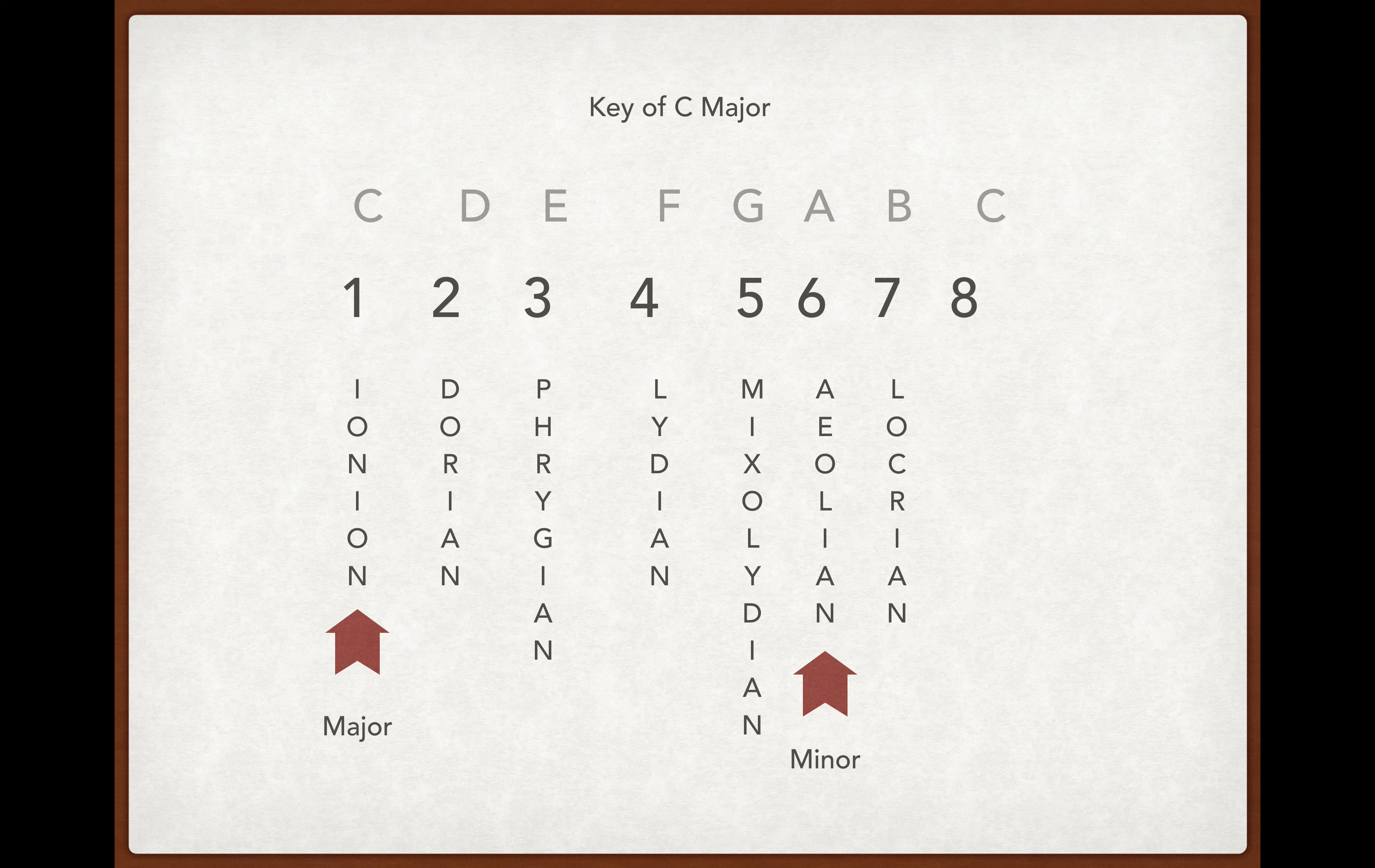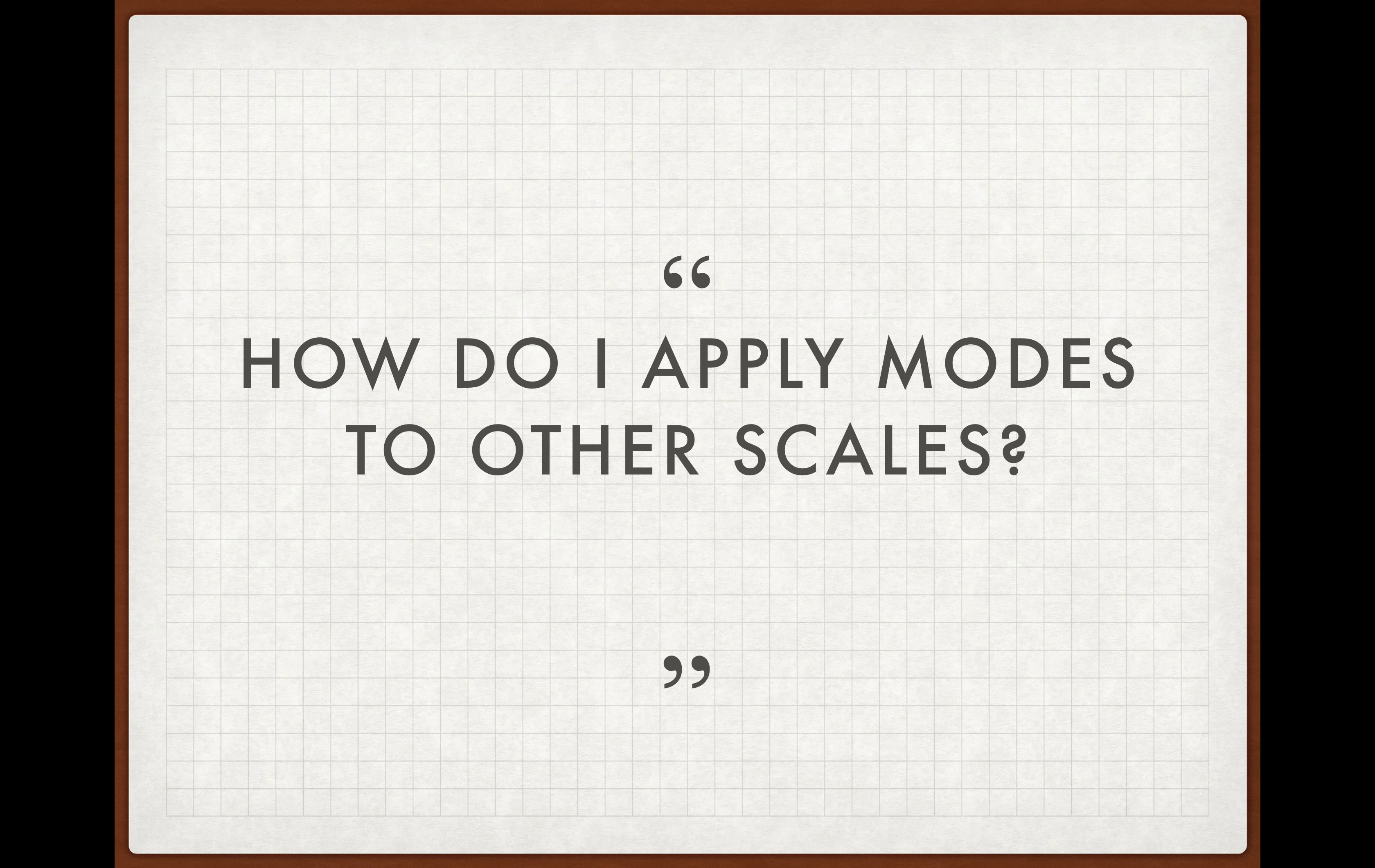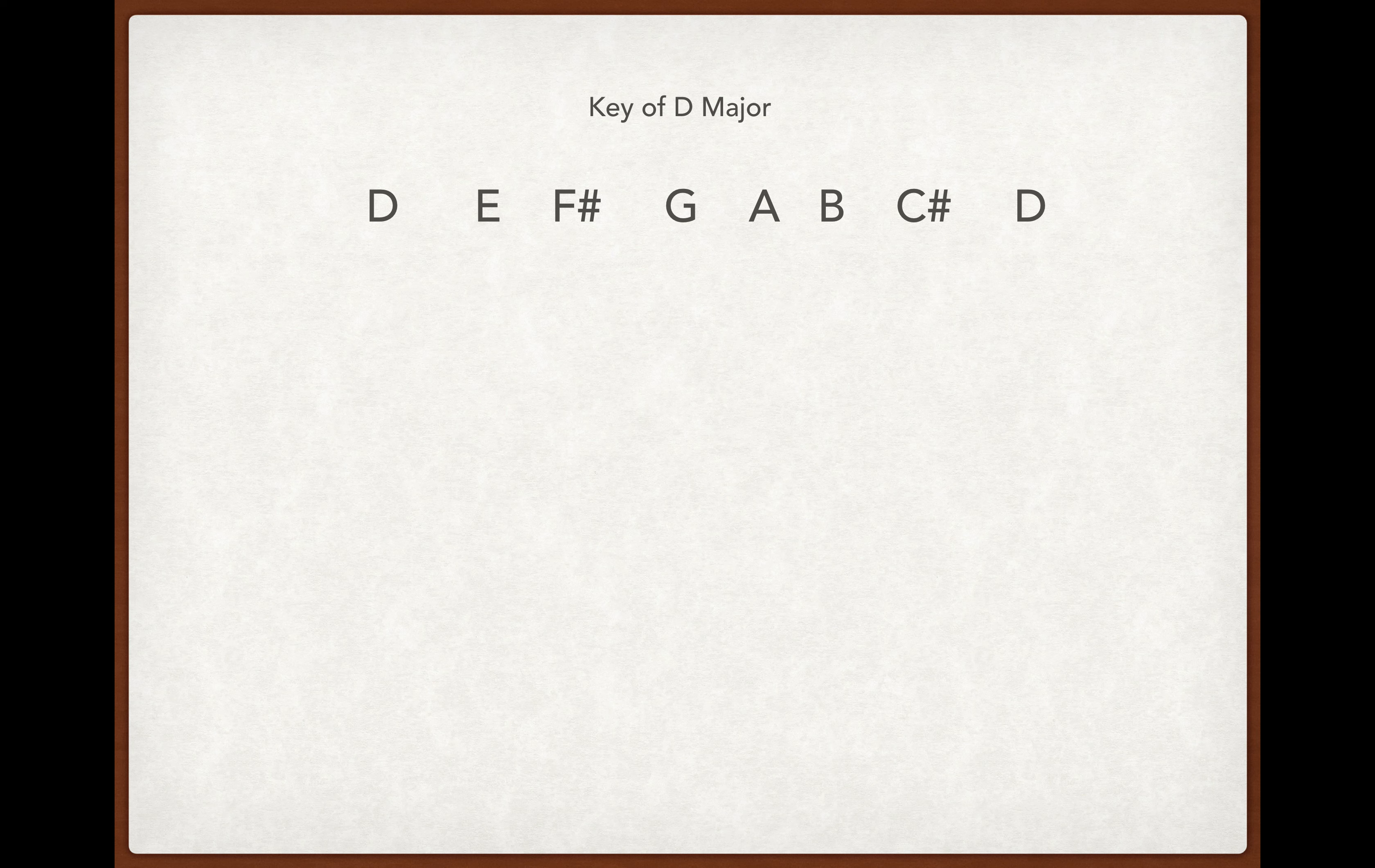Now how do we apply these modes to other scales? Let's take the D major scale. Here are all the notes in the D major scale: D, E, F sharp, G, A, B, C sharp, D.